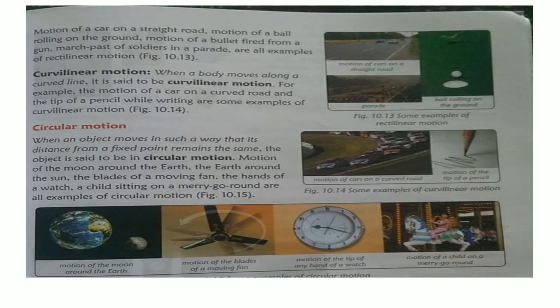Examples of circular motion: motion of the moon around the Earth, motion of the Earth around the Sun — both start and complete at the same point. The blades of a moving fan, the hands on a watch, and a child sitting on a merry-go-round are all examples of circular motion, as you can see in the pictures. We end our session here; in the next lecture we will study further. Thank you all.